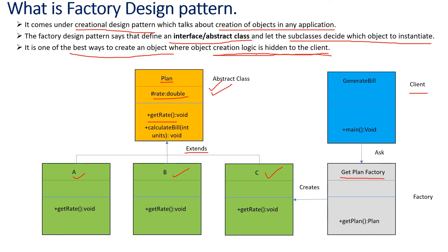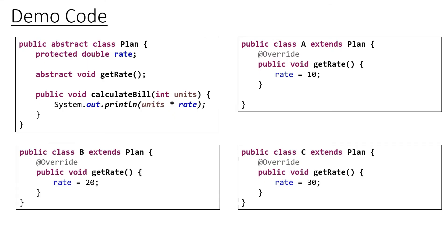Let me explain this UML diagram by looking at the Java code. We have an abstract class called Plan with a rate data member, a get rate method, and a calculate bill method. Then we have class A which extends Plan, class B which extends Plan, and class C which extends Plan. Since calculate bill uses an abstract method, we have to provide the method body in each subclass. For class A the rate is 10, for class B the rate is 20, and for class C the rate is 30.